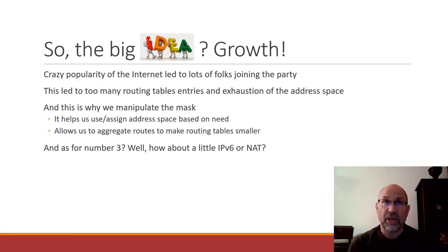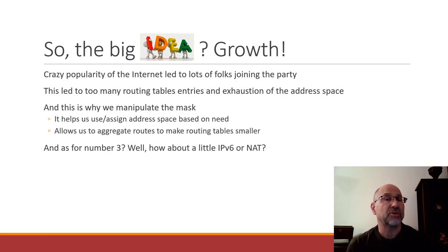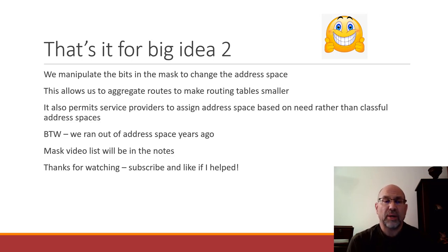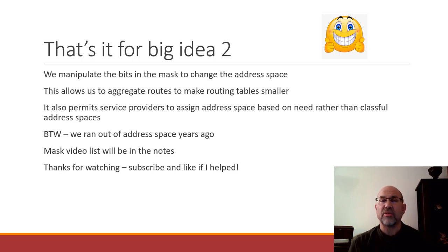As for problem number three — the full exhaustion of the 32-bit address space — how about IPv6 or network address translation? It turns out those, especially network address translation, have been very successful in keeping us away from address exhaustion. That's it for Big Idea Number Two. We manipulate the masks via the bits to change the address space. Why? It allows us to aggregate routes and make routing tables smaller, and it permits us to assign address space based on what we need rather than the very wasteful classful address space.